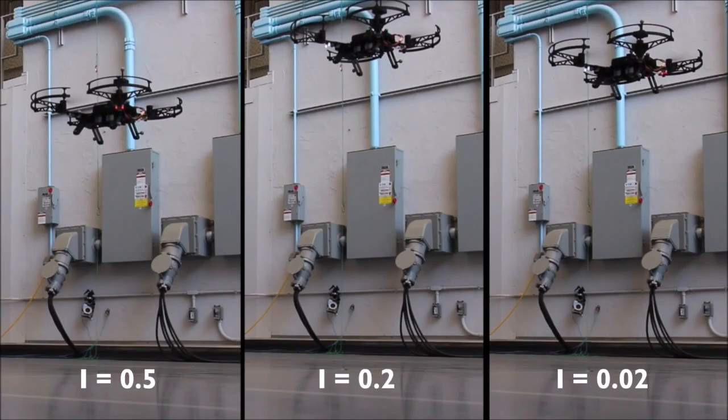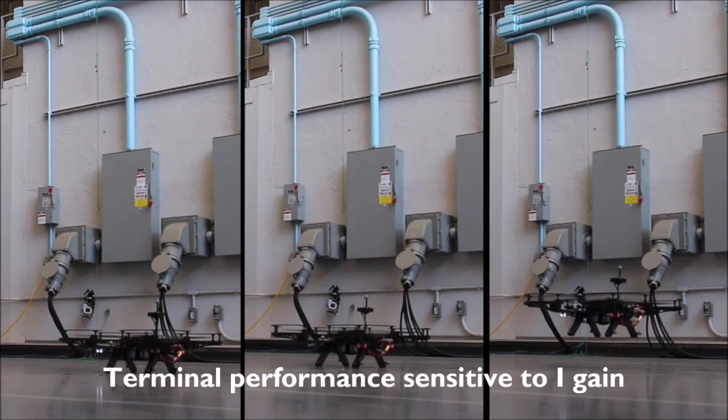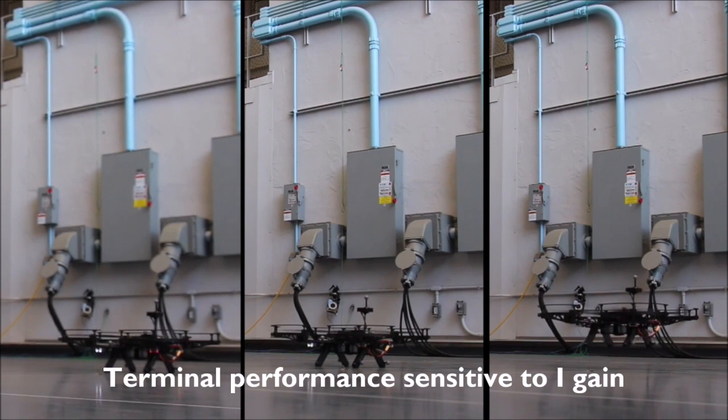Integral control is a common method to account for steady state error. However, the integral gain must be carefully tuned for each task because the performance of the controller is sensitive to the integral gain.